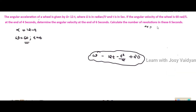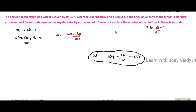Now, calculate the number of revolutions in these 6 seconds. The number of revolutions equals theta divided by 2 pi. We know that d theta divided by dt equals omega, so we integrate the omega equation to find theta.